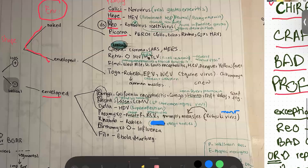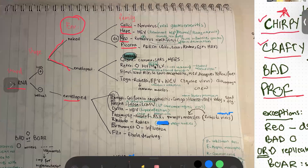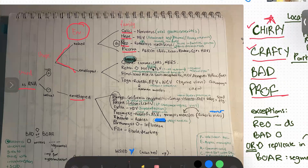The next mnemonic is crafty — these viruses look like they're having a party. Someone is having a Corona at a retro party, and Flavi is also wearing a toga dress. So the names for this part of the mnemonic are: C for Corona, R for Retro, F for Flavi, and T for Toga.